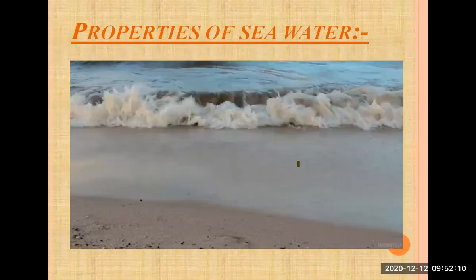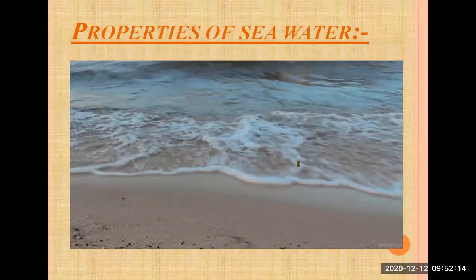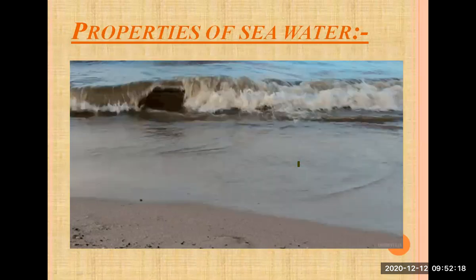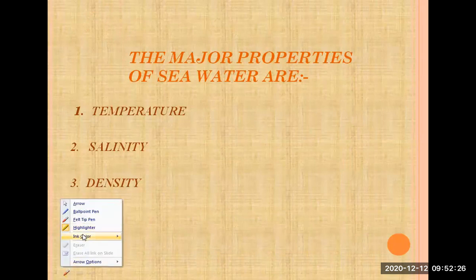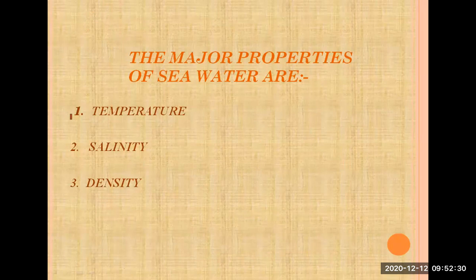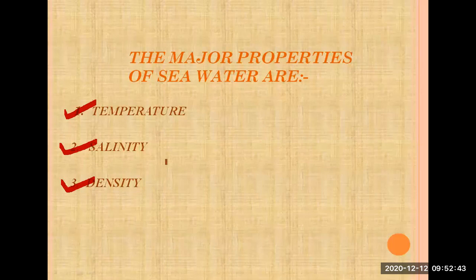To summarize: seawater is a complex mixture of 96.5% water, 2.5% salt, and smaller amounts of other substances including atmospheric gases and inorganic or organic materials. There are three main major properties of seawater: first is temperature, second is salinity, and third is density. We are going to study each one in detail, and we will also do a small experiment — an activity — which will be very interesting.